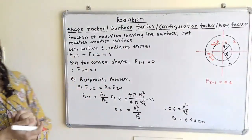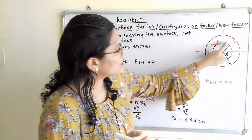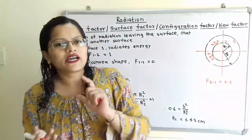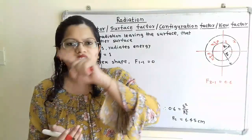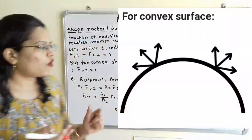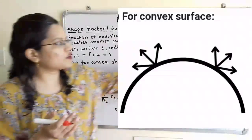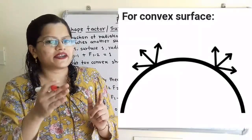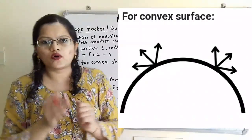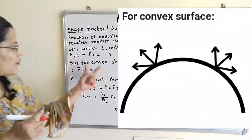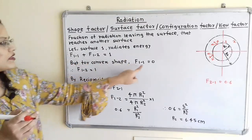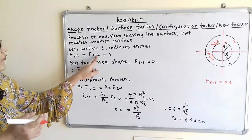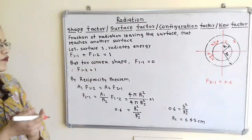Now, if we observe the shape of surface 1, it is convex. For a convex surface, it will never radiate energy onto its own surface, so F(1→1) = 0. From the enclosure equation, we can therefore say that F(1→2) = 1.